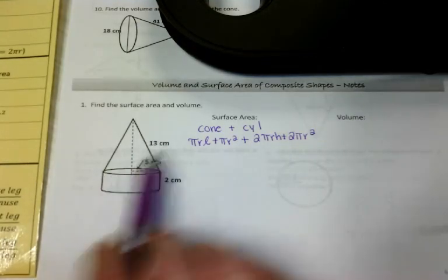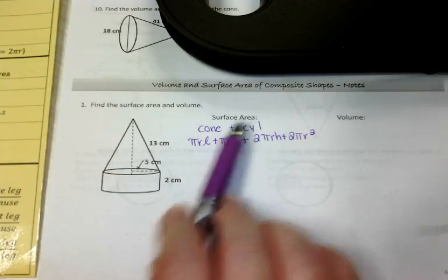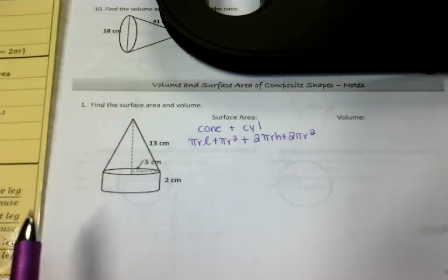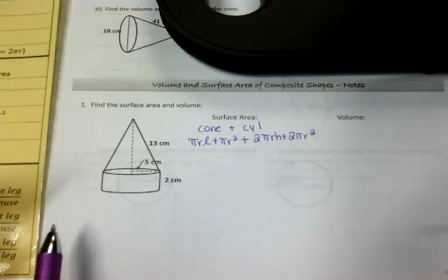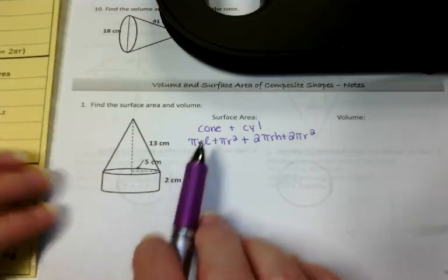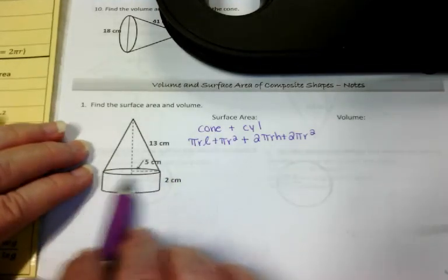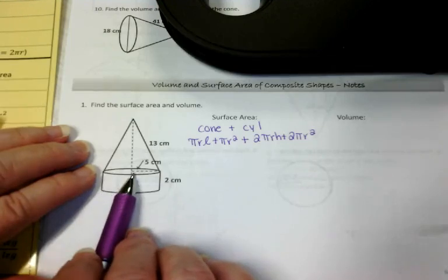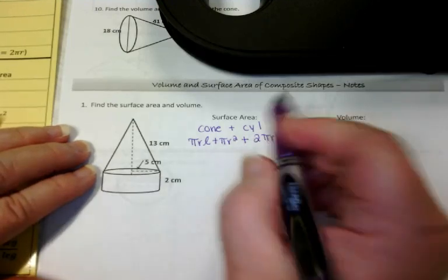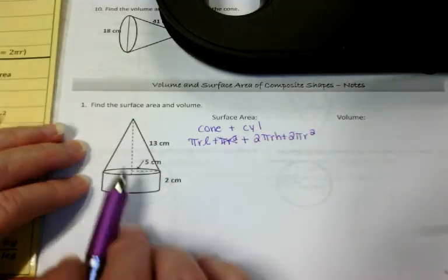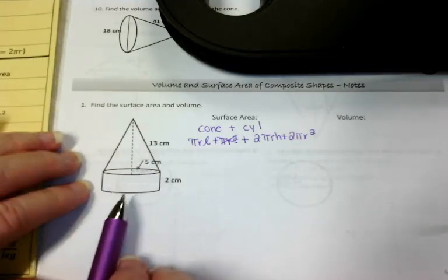But let's examine our shape for a minute. To say we're going to find the surface area means we're going to paint the outside, all the exposed surfaces. So in a cone, is this base, this circle, exposed? Is it going to get painted? Well, no. So we're going to cross that out. We're only going to find the lateral area of the cone.